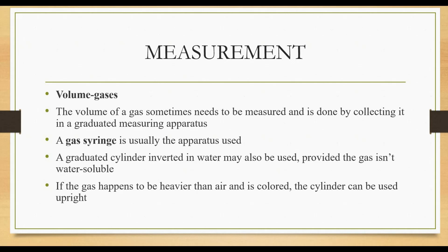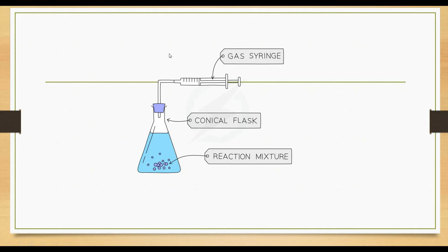Now, volume of gases. The volume of gas sometimes needs to be measured and is done by collecting it in a graduated measuring apparatus. A gas syringe is usually the apparatus used. A graduated cylinder inverted in water may also be used, providing the gas isn't water-soluble — this type is similar to what you may have seen in biology with photosynthetic plants measuring oxygen released. If the gas is heavier than air and is colored, the cylinder can be used upright. Here in the diagram, you can see a gas syringe attached to a conical flask reaction mixture, collecting and measuring the volume of gas produced.